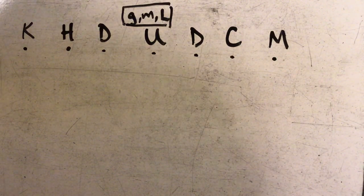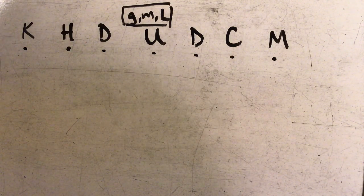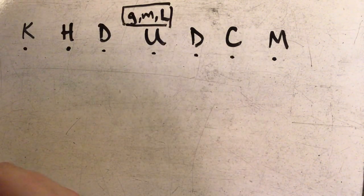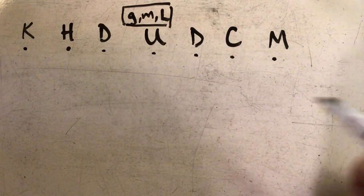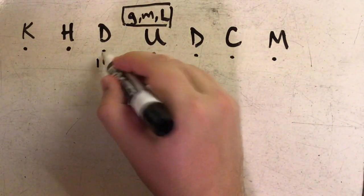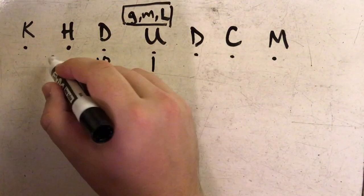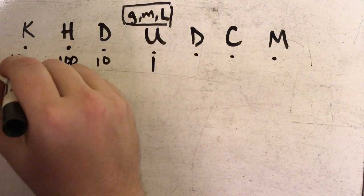The reason their order matters is because the metric system is what's known as a base 10 system, which means that units to the left are 10 times greater than the units to the right. So if I had, let's say, one meter, I would have 10 decameters, I would have 100 hectometers, and I would have a thousand kilometers.